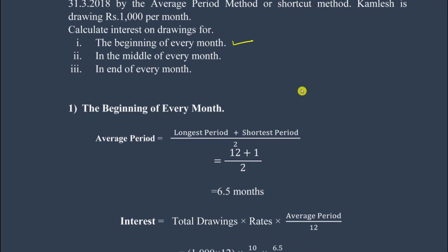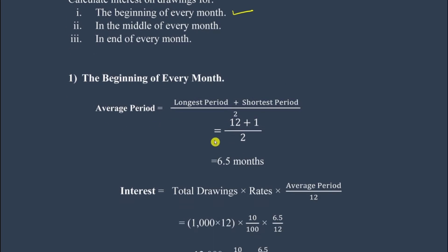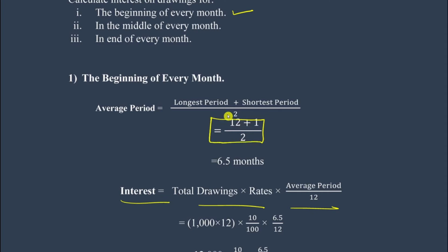For the beginning of every month, first you need to calculate the average period to calculate the interest. The formula for average period is: Average Period = (Longest Period + Shortest Period) / 2. He is drawing every month at the beginning, so we need to identify the longest and shortest periods.